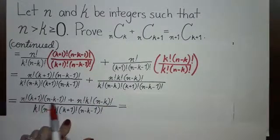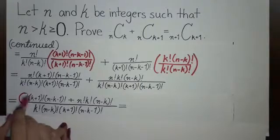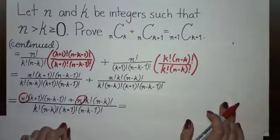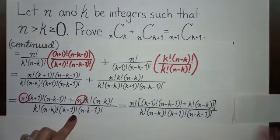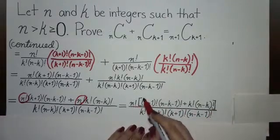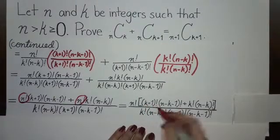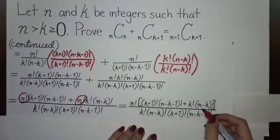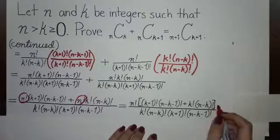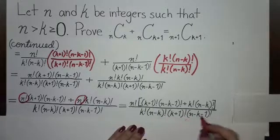Looking at the two terms in the numerator, we can see that both have n factorial, so we can factor that out and rewrite it as n factorial times the quantity: k plus one factorial times n minus k minus one factorial plus k factorial times n minus k factorial, divided by k factorial times n minus k factorial times k plus one factorial times n minus k minus one factorial.